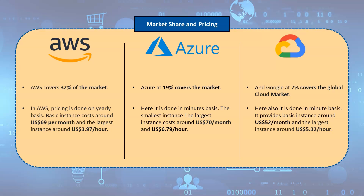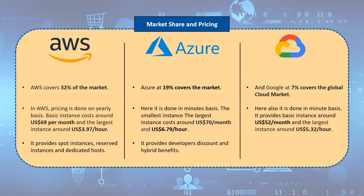Compared to AWS, GCP supplies the most basic instance with two virtual CPUs and 8 GB of RAM for 25% less, costing roughly $52 per month. GCP's largest instance with 3.75 TB of RAM and 160 vCPUs costs around $5.32 per hour. Amazon also provides spot instances, reserved instances, and dedicated hosts with multiple offers and discounts. Azure provides special prices to developers and the Azure Hybrid Benefit, which benefits organizations up to 40% if they use Microsoft software in their data centers. Google offers sustained use discounts which activate if you use the same instance for a month.